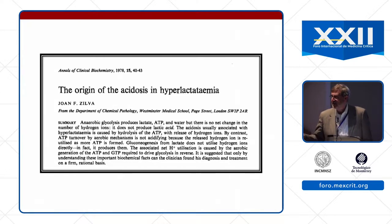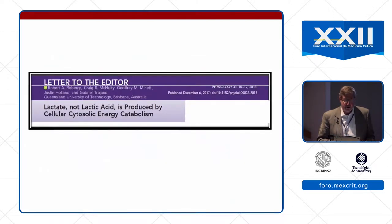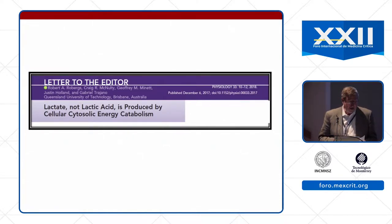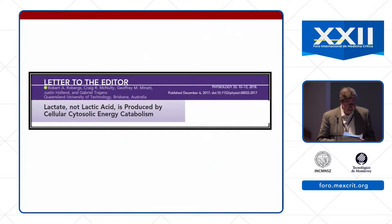You might say that was over 40 years ago, surely we've straightened things out by now. But Robert Robergs, one of the most accepted authorities on lactate physiology, wrote in 2018: 'There is no such entity as lactic acid in any living cell or physiologic system. It is impossible, based on the fundamental laws of physics underpinning organic chemistry, metabolic biochemistry, acid-base chemistry, and physiology, for lactic acid to be produced or present in living systems.'